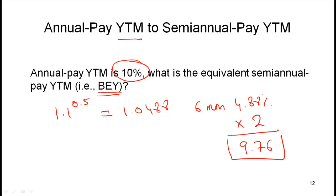In other words, if you have an annual pay that gives you 10% and a semi-annual that gives you a bond equivalent yield of 9.9%, then this bond which makes semi-annual payments with a BEY of 9% is better than an annual pay bond which gives you a yield of 10%.